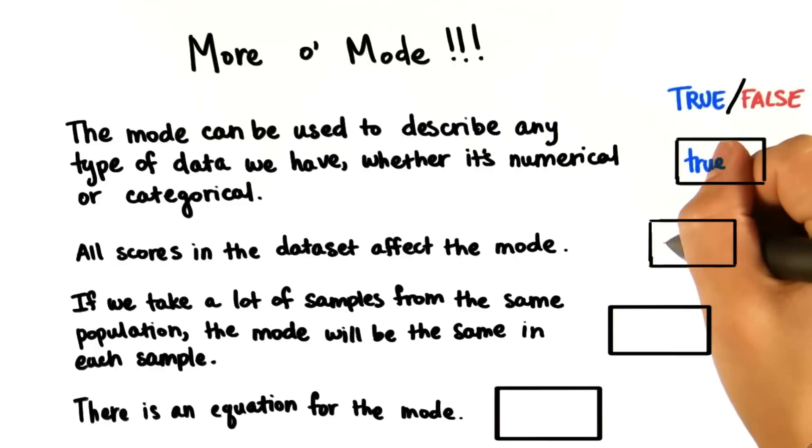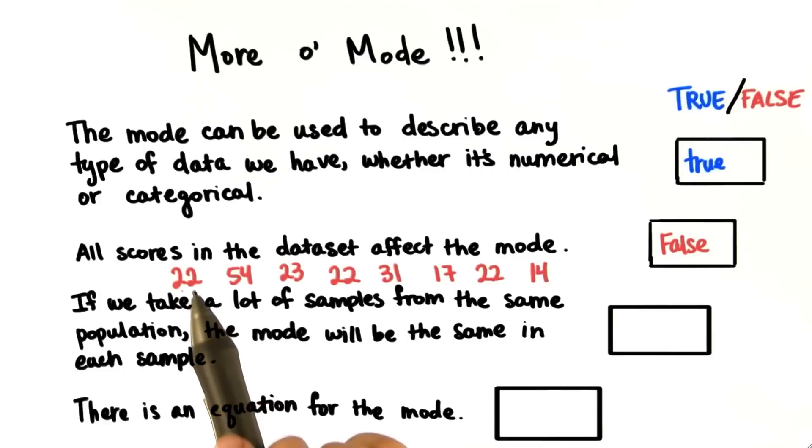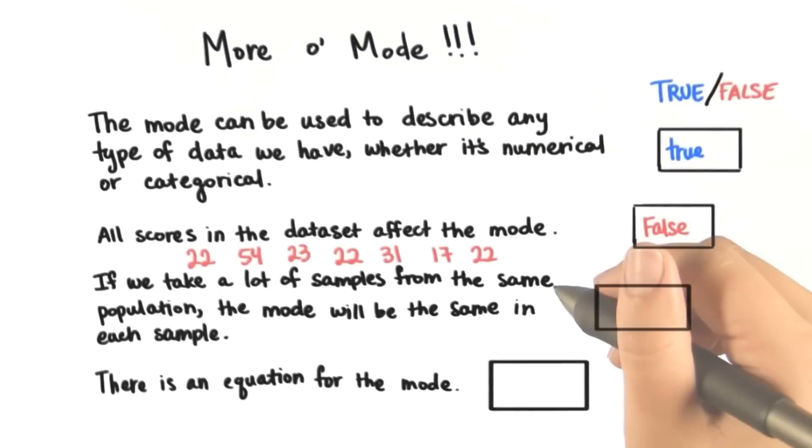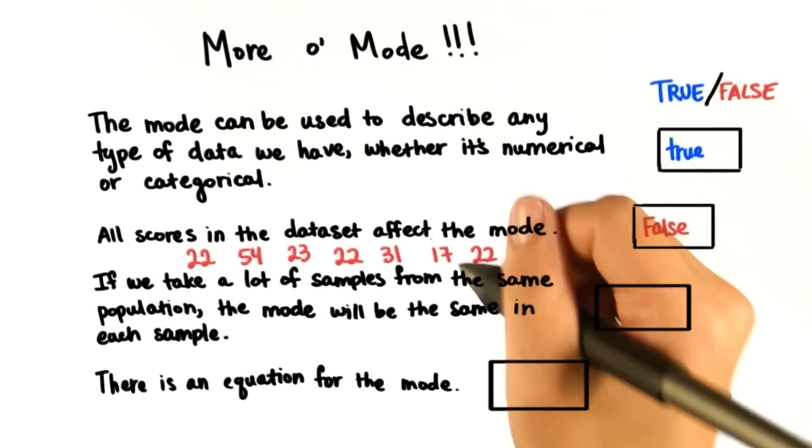However, all scores in the data set don't affect the mode necessarily. Take this data set. The mode is 22 because it occurs three times and the rest of them occur once. However, if we take away the value 14, the mode will still be 22.